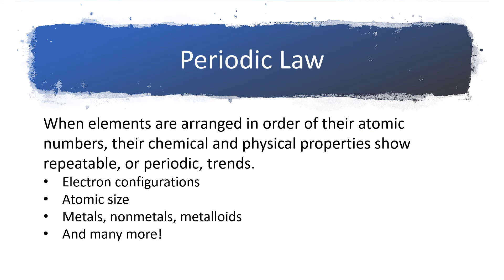This arrangement of elements is sometimes referred to as the periodic law. And that just basically says when elements are arranged in order of their atomic numbers, their chemical and physical properties show repeatable or periodic trends.